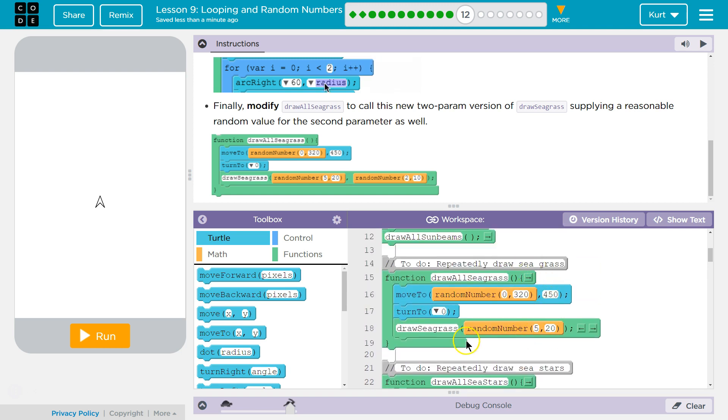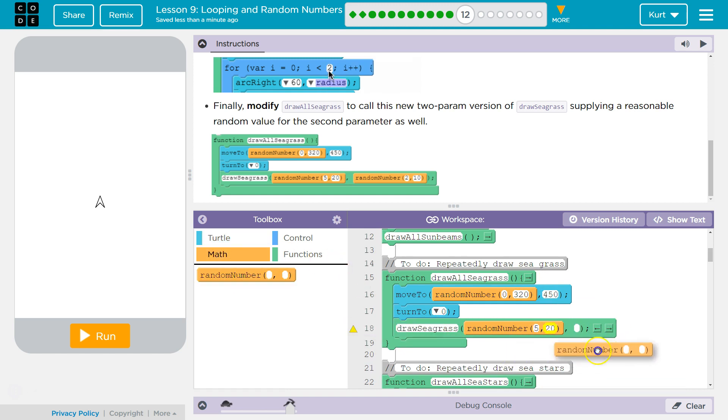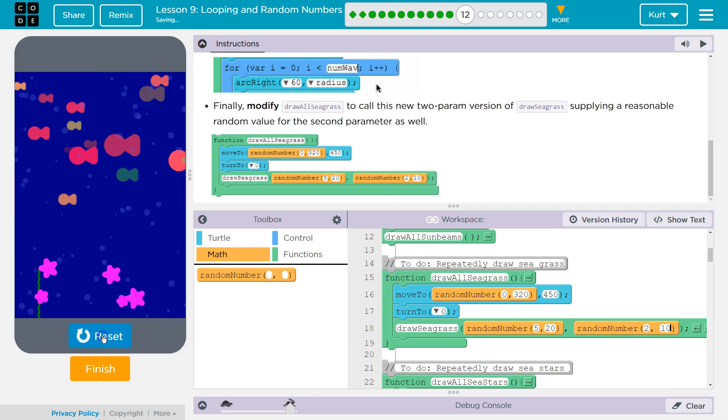Great. Now, when we call the function Draw Seagrass, we need another parameter. Math. Going to drag in another random number. A reasonable. They set theirs to 2 to 10, so let me check out what that looks like.